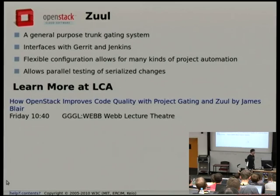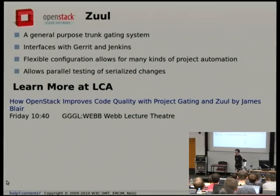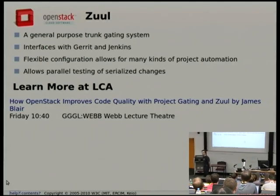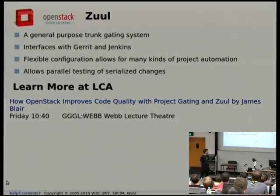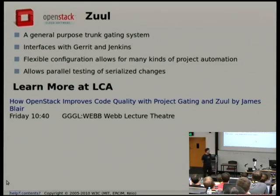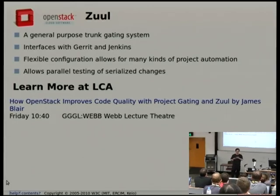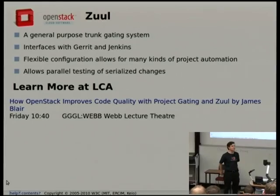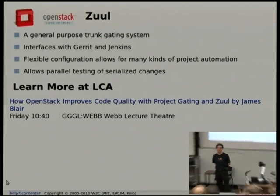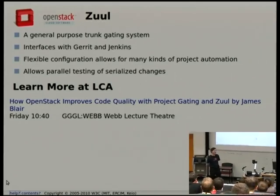The engine that drives all of this automation is called Zuul. It's a general-purpose project gating and automation system — another piece of software we wrote within the OpenStack infrastructure project. It interfaces with Gerrit and Jenkins, though at this point it can interface with anything else you might want. It does this mind-bending thing: it tests a serialized queue of changes in parallel. I don't have time to get into how that works in this talk, but on Friday at 10:40 I'm giving a talk that focuses more closely on Zuul itself.